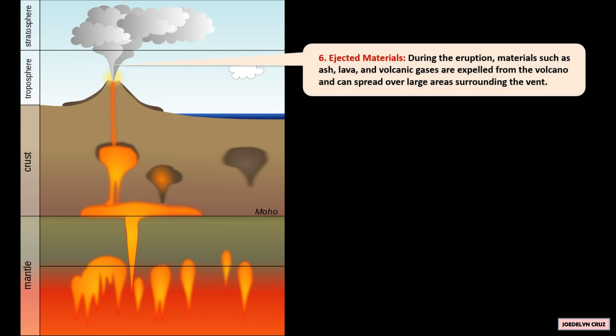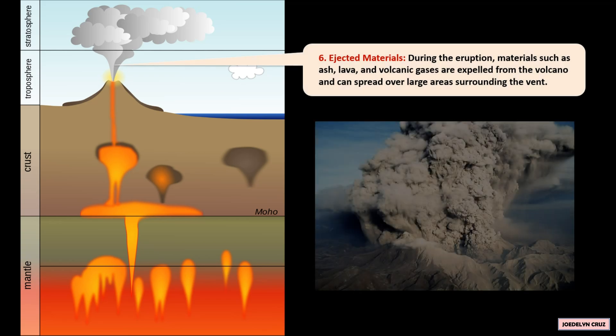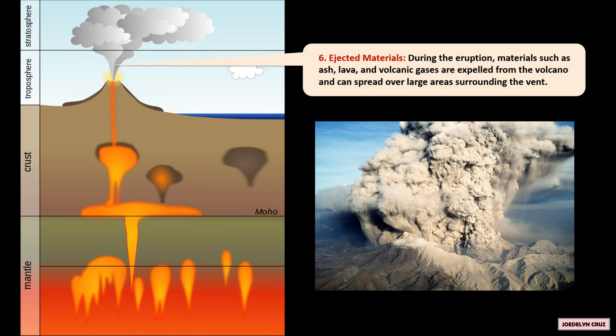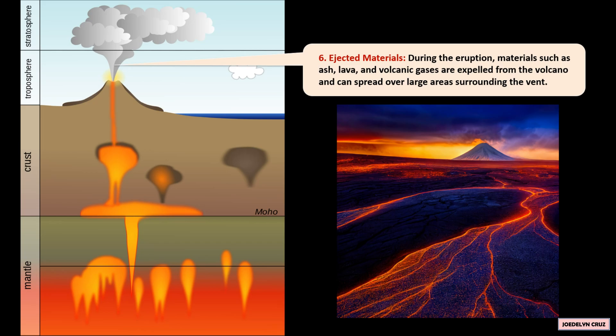Ejected Materials. During the eruption, materials such as ash, lava, and volcanic gases are expelled from the volcano and can spread over large areas surrounding the vent.